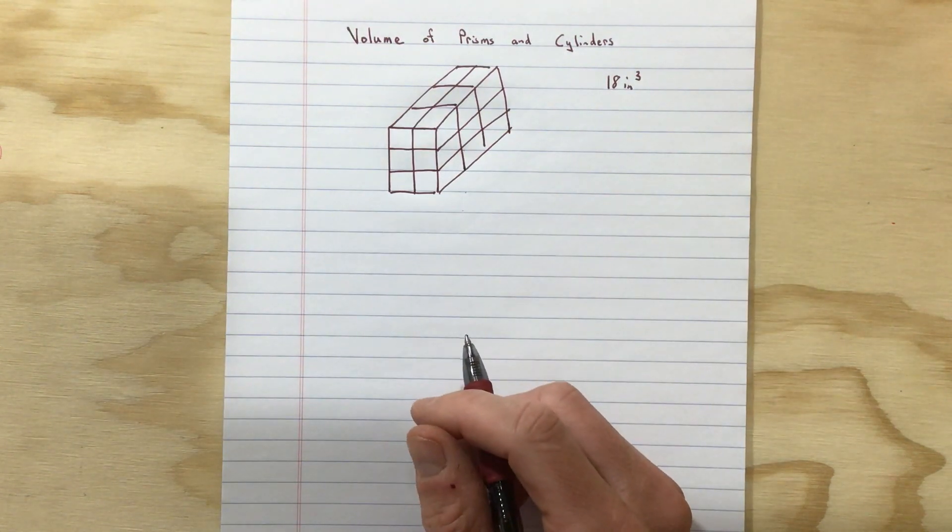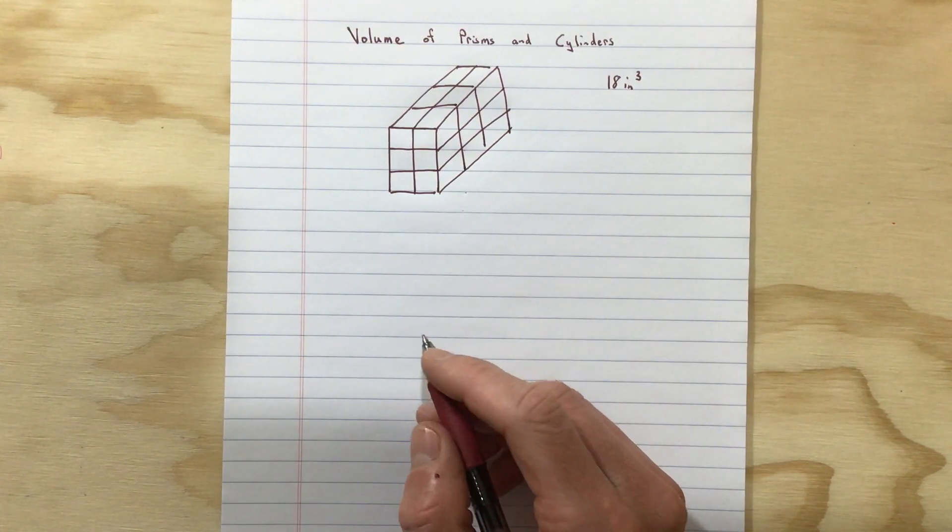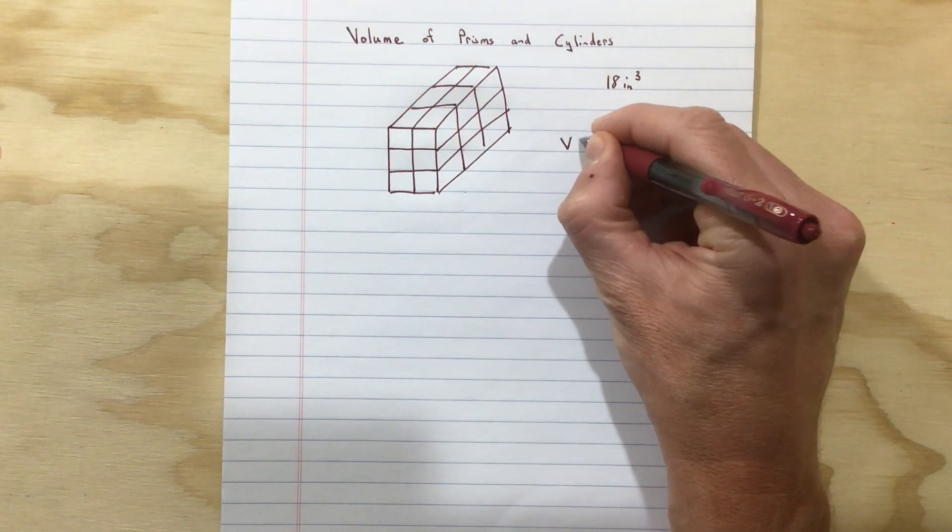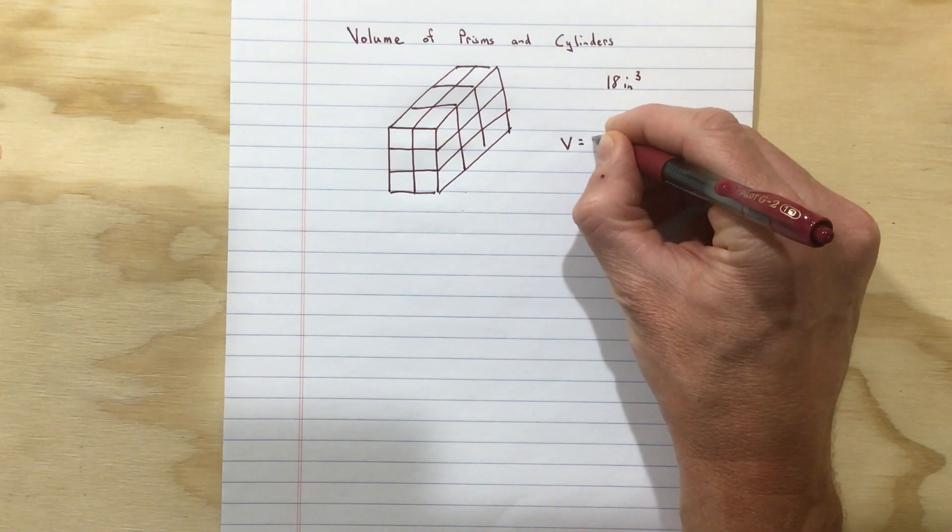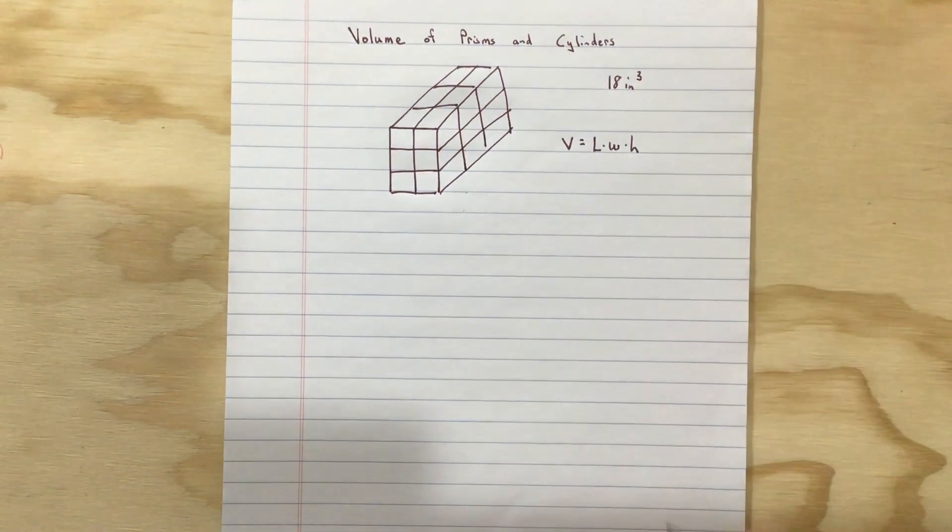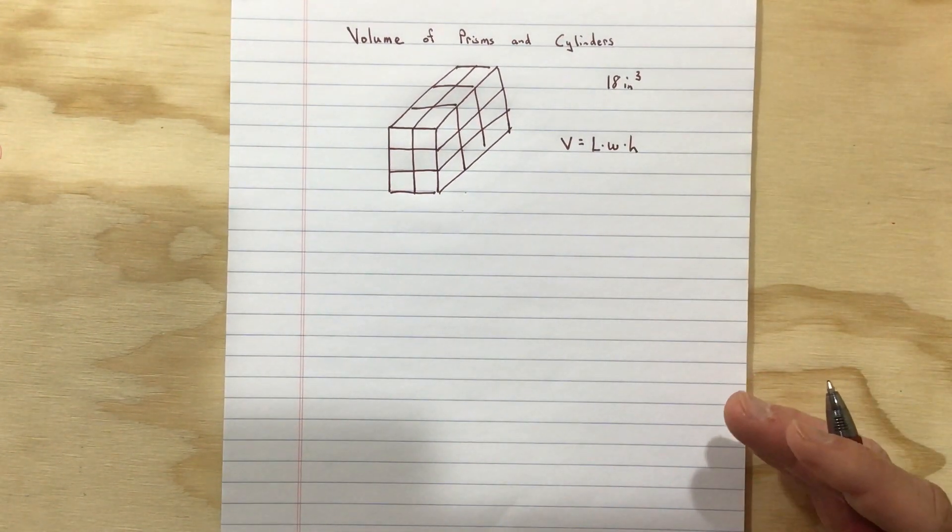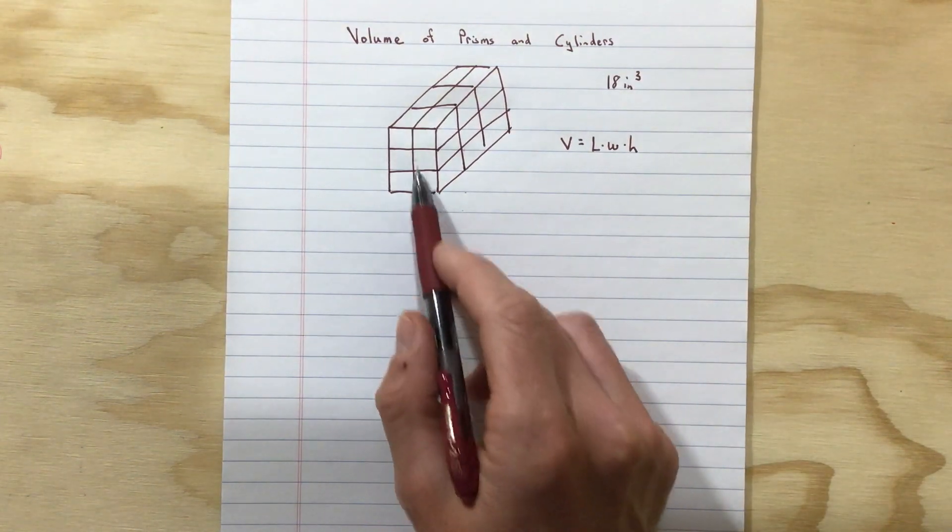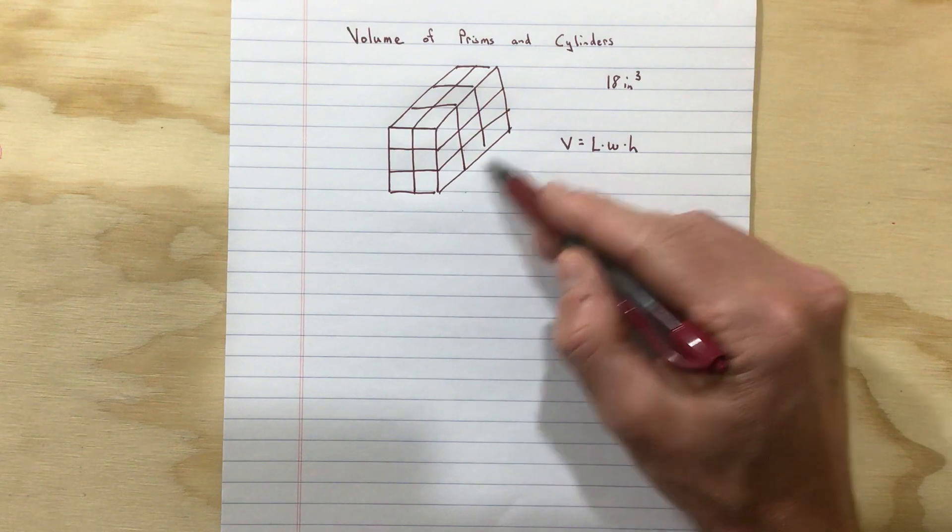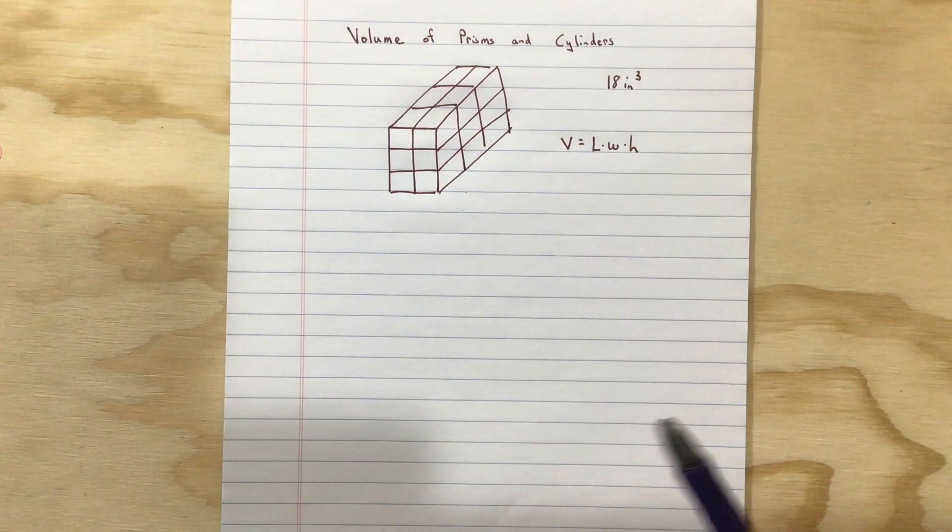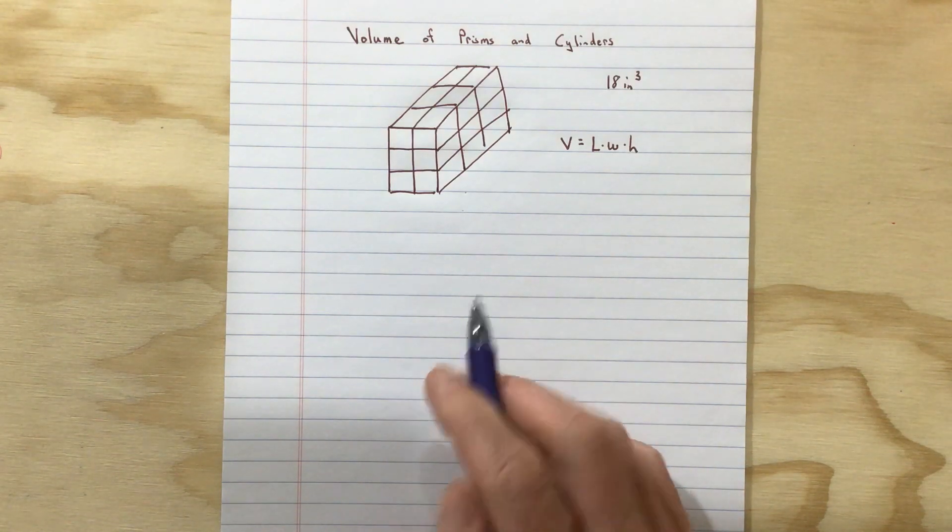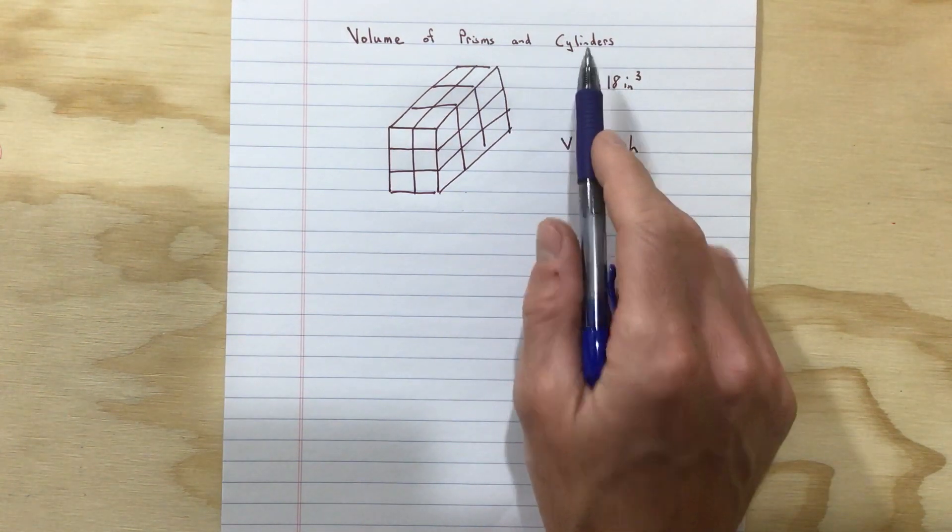I know this is review. There's no way we've made it this far in math without talking about the volume of a prism. For a rectangular prism, most people would say the volume is just length times width times height. You're looking at all three dimensions. The length and the width give you the number of cubes in that front face, and then you're just multiplying by the height. What I really want to emphasize is that idea.